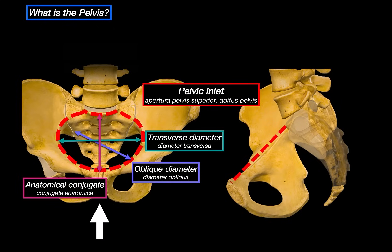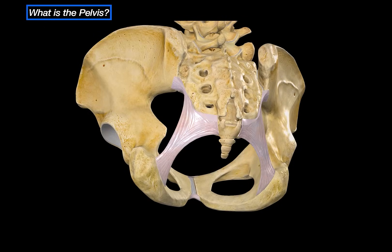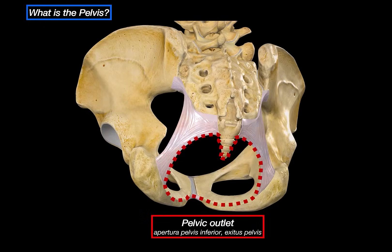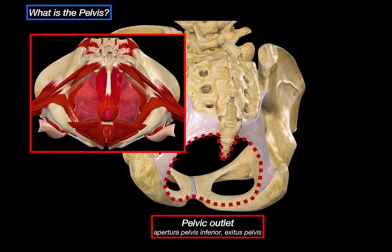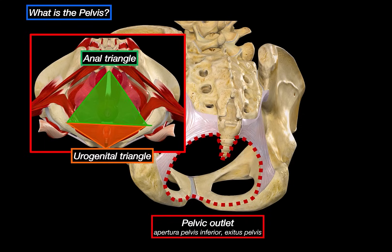Looking from the inferior view, we can see another important boundary — the pelvic outlet, the lower opening of the true pelvis. It is divided into two triangles: the urogenital triangle at the front and the anal triangle at the back. These triangles reflect the orientation of muscles, fascia, and clinical zones. For example, when a woman is giving birth, sometimes a surgical cut called an episiotomy has to be performed to enlarge the vaginal opening and facilitate delivery, and this is performed in the perineal region right across these triangles.